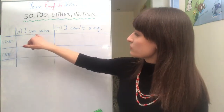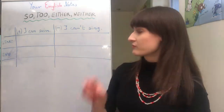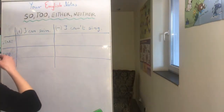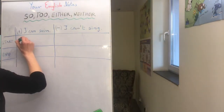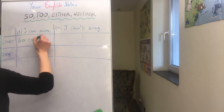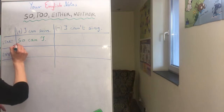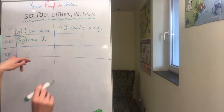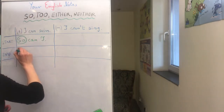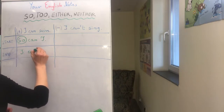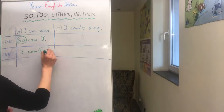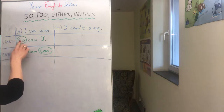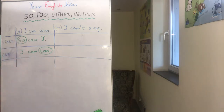So if you want to agree with the positive sentence, you have got two options. The first one is that you can start the sentence with "so" — so can I. The second option is that you can use "too" at the end — I can too. So "so" is at the beginning of the sentence and "too" is at the end of the sentence.